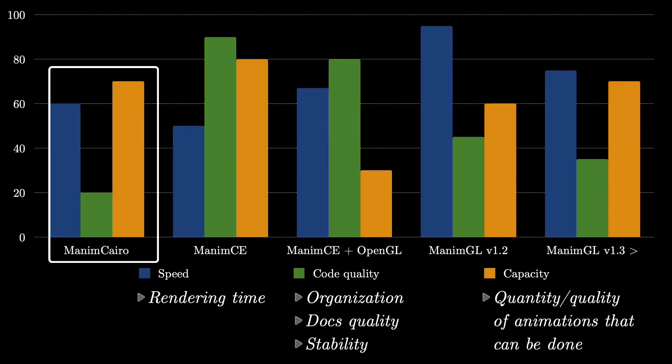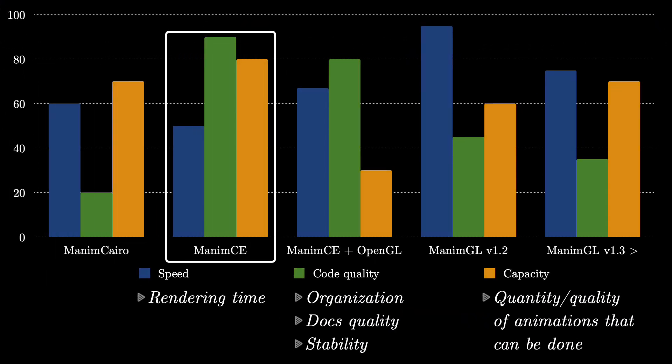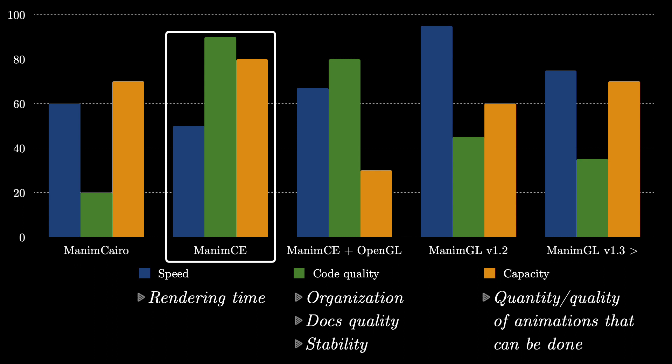Unlike Manim Cairo, Manim CE has excellent documentation, but since it still lacks documentation for some objects, I don't give it 100 points yet. It is the most stable version of all Manim versions, but it is also the slowest. That is generally not a problem unless you want to do 3D animations. The big advantage of Manim CE is that it has a lot of features that Manim Cairo does not have, so developing animations with Manim CE is easier.